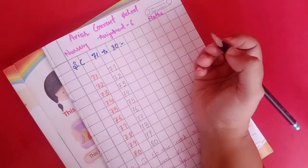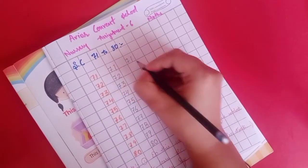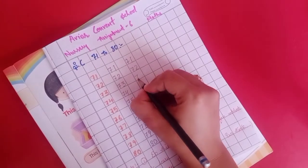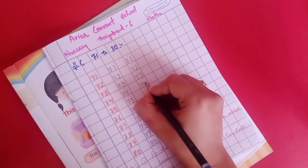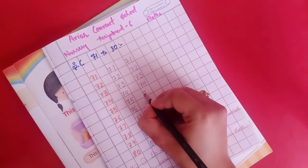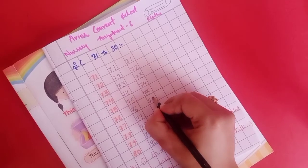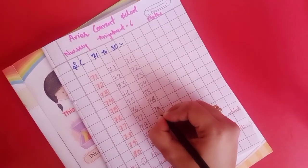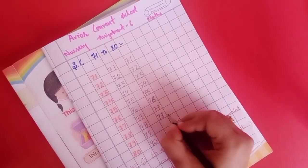We can also do it like this: 71, 71, 72, 72, 73, 73, 74, 74, 75, 75, 76, 76, 77, 77, 78, 78, 79, 79, 80, 80.